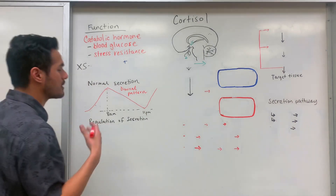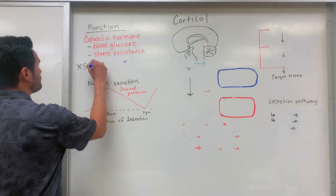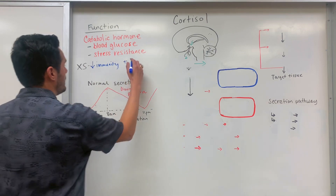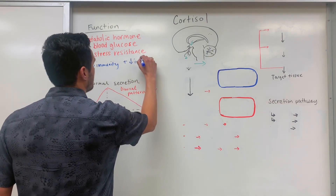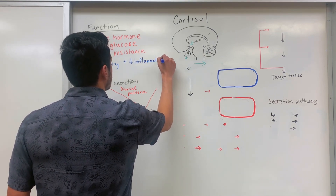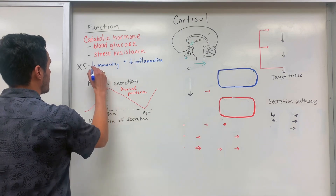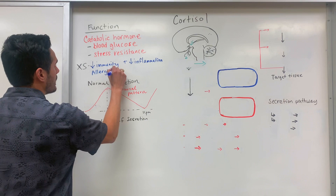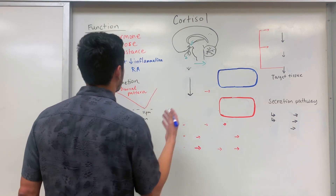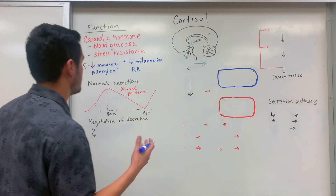What happens when cortisol levels are secreted in excess? There are a couple of different things. First, it reduces immunity — the immune response — and another thing that's reduced is inflammation, so cortisol acts as an anti-inflammatory. Corticosteroids are commonly used to treat allergies as well as rheumatoid arthritis. With rheumatoid arthritis, there is inflammation within those joints, and by administering corticosteroids this will help to reduce some of that inflammation.